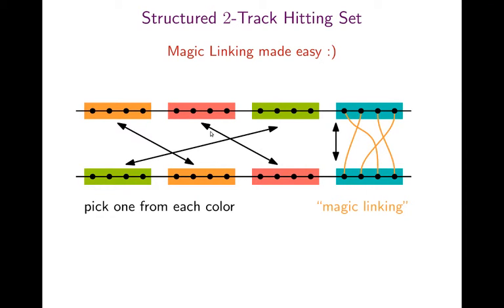Yeah, so this would be the far away idea, the very high level idea. And this magic linking, however, seems pretty tough. So it seems to be very difficult to achieve that we can link any arbitrary points. So what we do instead is, we don't link everything, so we just link certain things, and then it goes to structured 2-track hitting set. And the idea is to make this magic linking a little bit more restricted, so that we can code it. So here, the idea is that the elements on track A are partitioned into color classes, k color classes, and the same happens for the elements on track B. And color classes are always consecutive and of the same size.